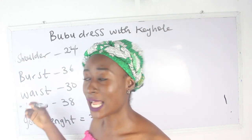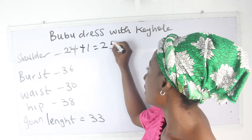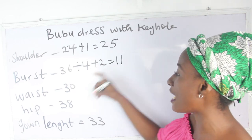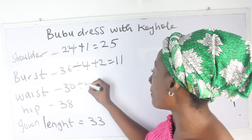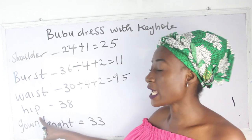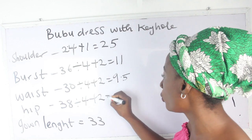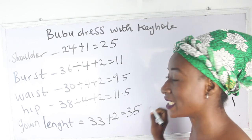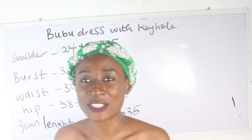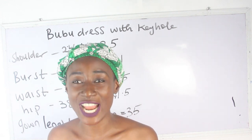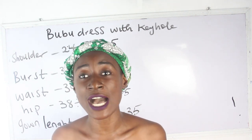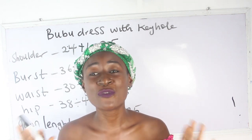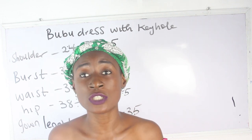So for me I have 24 inches, and I'm going to add one inch for my folding allowance, giving me 25 inches. My bust is 36 — divided by four plus two — I have 11. Waist is 30 — divided by four plus two — I have 9.5. Hip is 38 — divided by four plus two — we have 11.5. My gown length is 33 plus two inches, giving me 35 inches. These are the basic measurements required to achieve your booboo dress with keo. You can also join us for training — both online and physical — all details in the description box below.